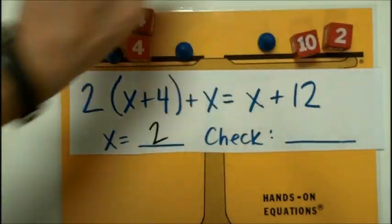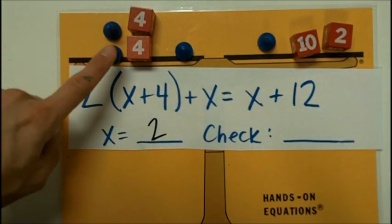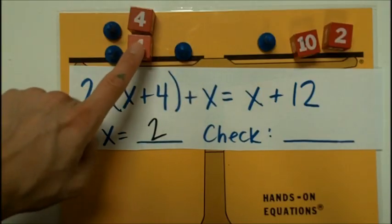Now I'm going to check it by plugging in 2 for the pawns. 2, 4, 6. Plus 4 is 10. Plus 4 more is 14.